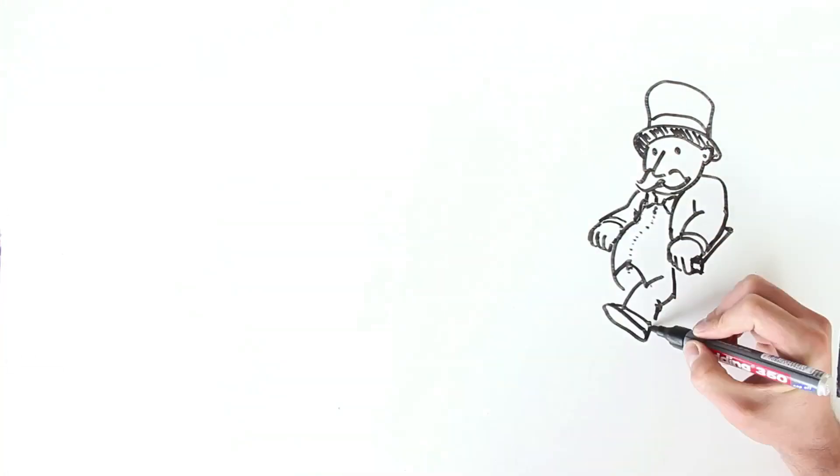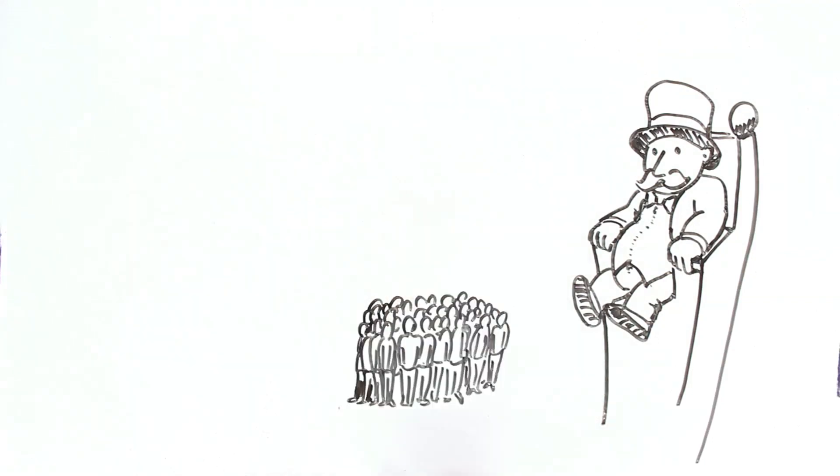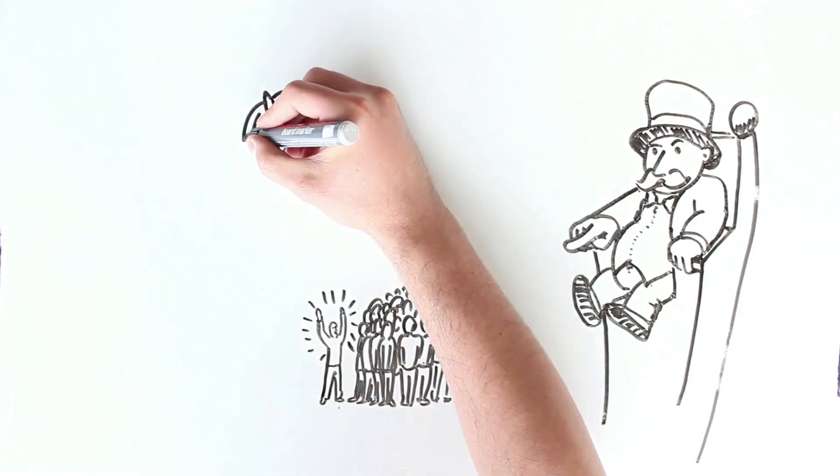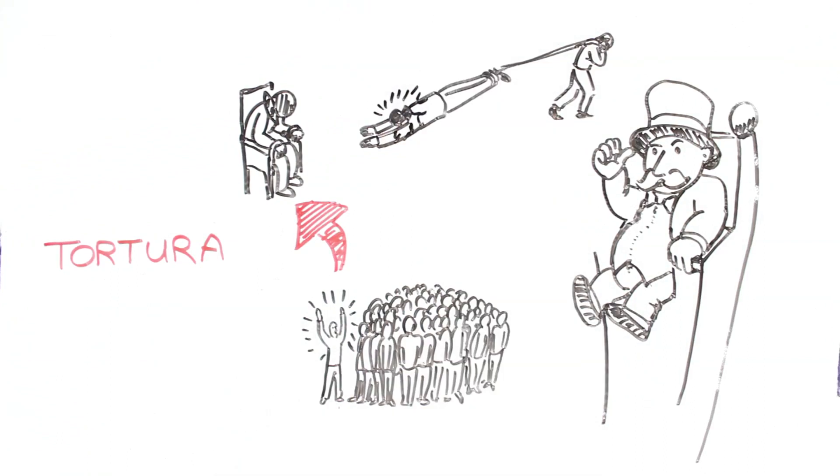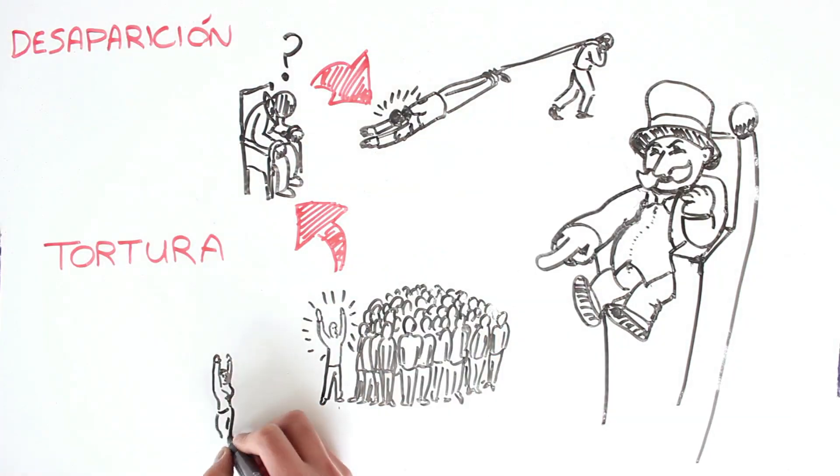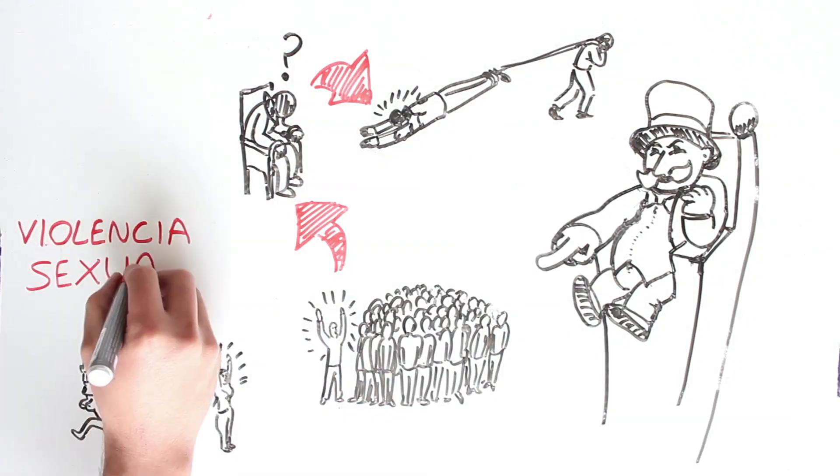Se extendieron los casos de tortura, de desapariciones forzadas, de violencia sexual contra las mujeres. La represión se hizo cotidiana y se instituyó un régimen político que no ha tenido variación sustancial desde mediados del siglo pasado.